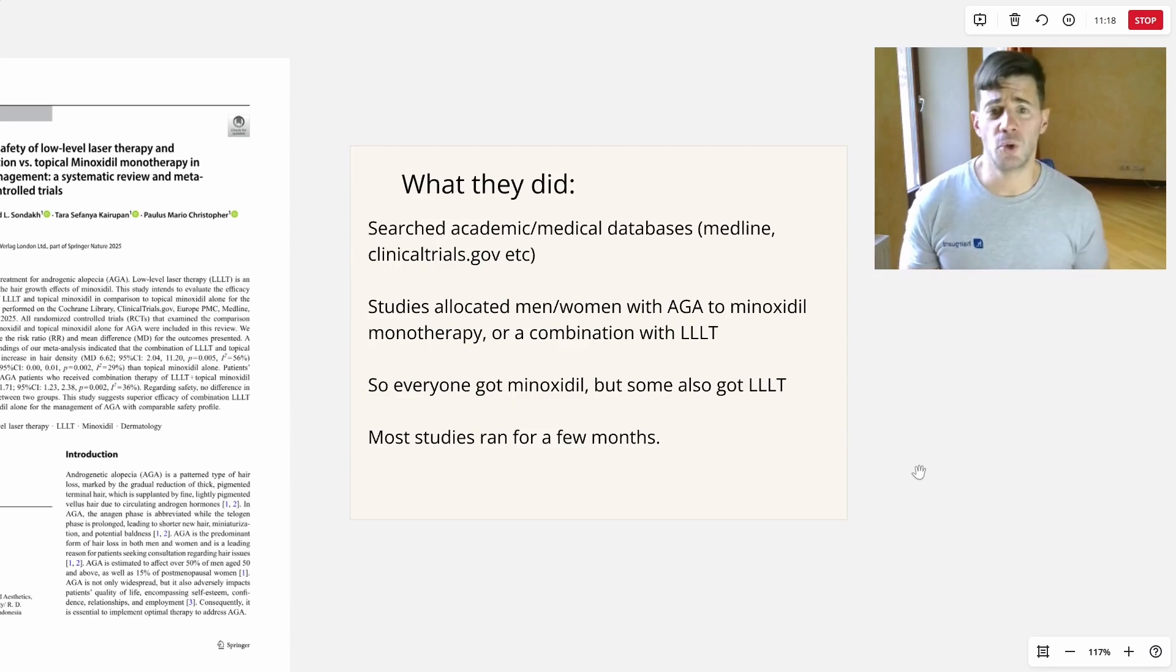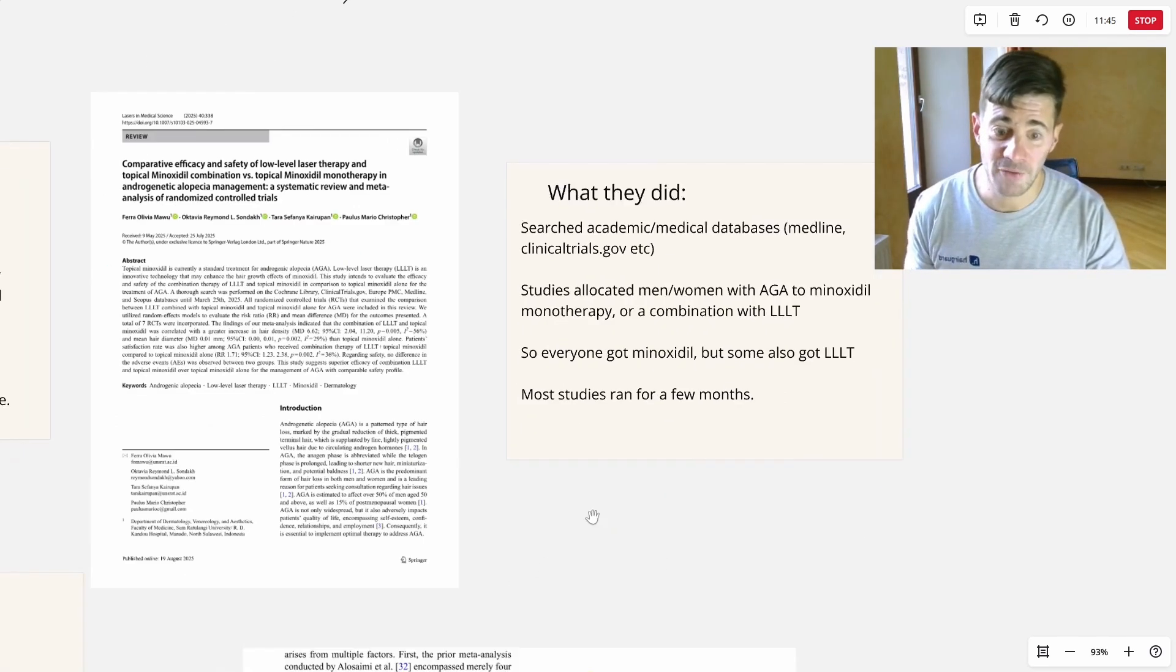So what did these researchers do? Well, they searched various academic and medical databases like Medline, ClinicalTrials.gov, etc. And they found studies that allocated, randomly allocated men and women with androgenic alopecia to either minoxidil monotherapy or the combination of minoxidil plus LLLT. So every single person in these seven studies got minoxidil. The difference is that some of them also got LLLT and most studies ran for a few months.